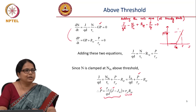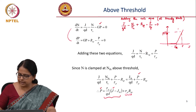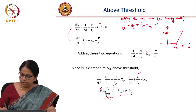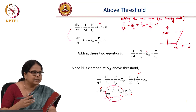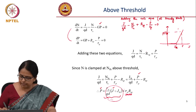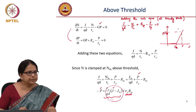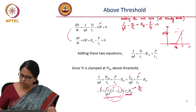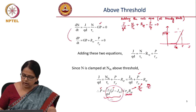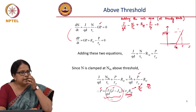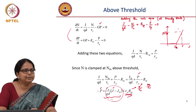So this equation represents the behavior above threshold. When J = j_th, the first term is zero and only spontaneous emission exists. When J < j_th, there is no stimulated emission — only spontaneous emission contributes. The slope of P versus J changes at threshold. Below threshold, R_sp = N/τ_radiative and N is increasing; at threshold it clamps at n_th/τ_r; above threshold the stimulated term dominates. But this is only photon density — we should ultimately be interested in power.